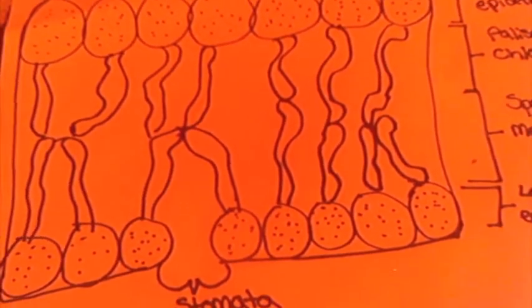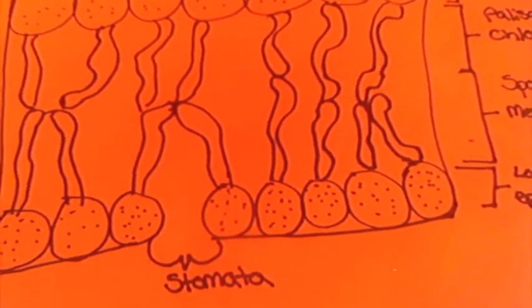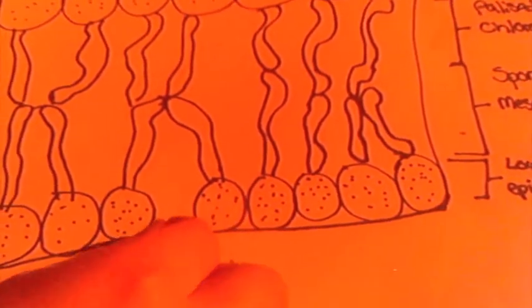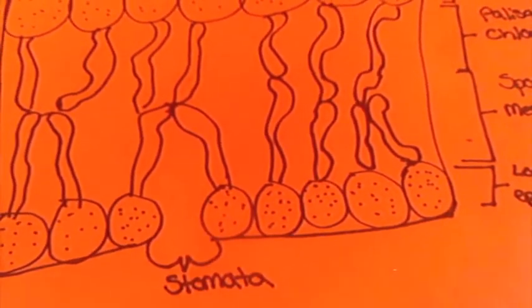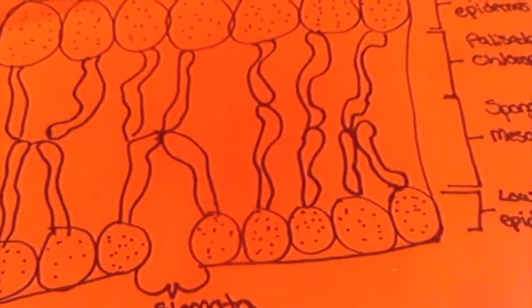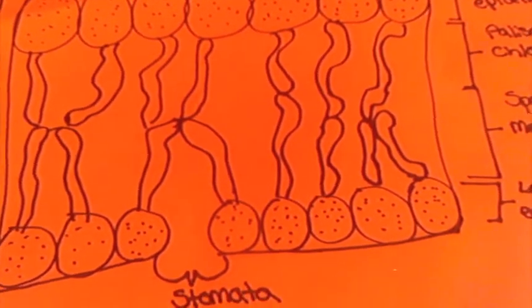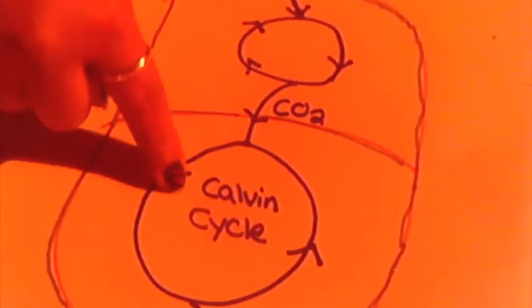During the day in plants with CAM photosynthesis, the first thing that happens is they close their stomata. Then they release carbon dioxide from the accumulated malic acid, they combine this released carbon dioxide with RuBP, and the Calvin cycle operates as shown.